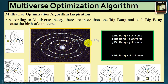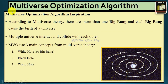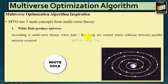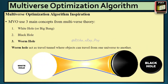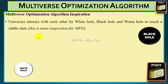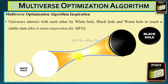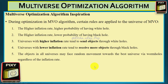In the Multiverse Optimization Algorithm, three main concepts from multiverse theory are used: white hole (or Big Bang), black hole, and wormhole. White holes or Big Bangs are created where collisions between parallel universes occur. Black holes can attract everything including light with their higher gravitational force. Wormholes act as travel tunnels where objects can travel from one universe to another. Universes interact with each other via these three mechanisms to reach a stable state.